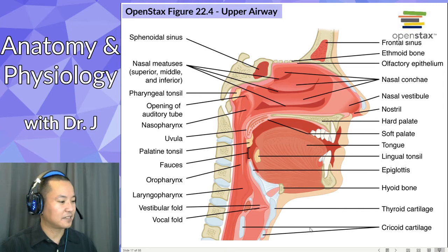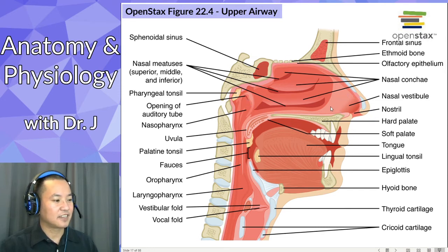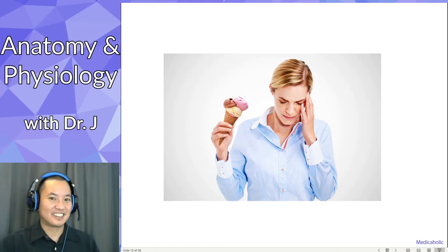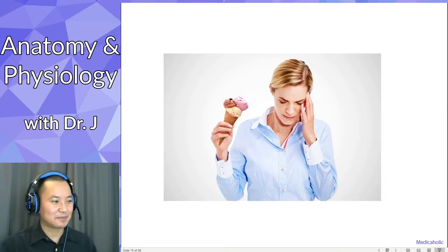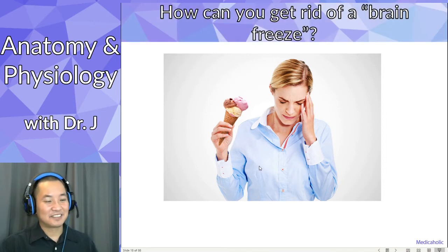So this is your upper airway — sometimes it includes the larynx, sometimes it doesn't. It includes your nasal cavity, your oral cavity, and then it ends up in a common pathway. I'm pretty sure everyone here has had ice cream at one point. Why is she holding her head? Is she having a terrible day? Maybe she's like me and ate her ice cream too fast — so you've probably had what you call a brain freeze.